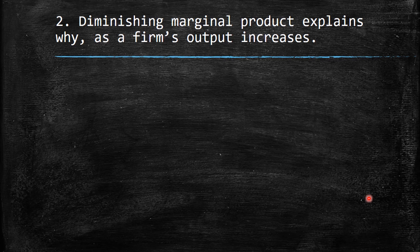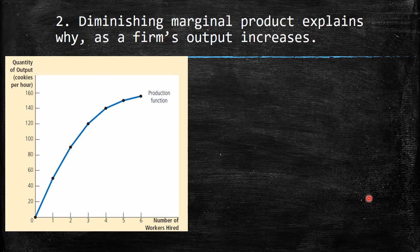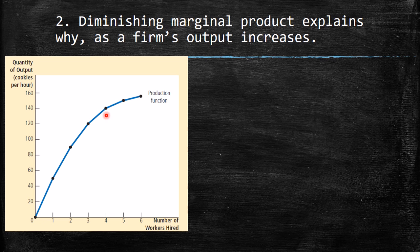The second question says: diminishing marginal product explains why, as a firm's output increases... First we need to remember what we refer to when we talk about diminishing marginal product. The basic concept is that when we increase one worker — which is the input — production will increase, but it will increase in different quantities. As you notice, the slope of the production function curve is getting flatter. This is the principle of diminishing marginal product.